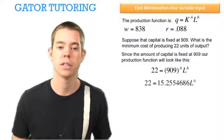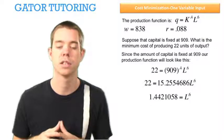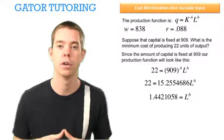We can work this out and see that when we divide through by roughly 15 on both sides, we get L to the 0.6 equals 1.4421058.